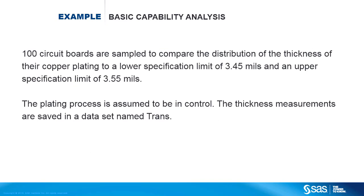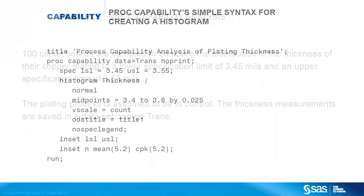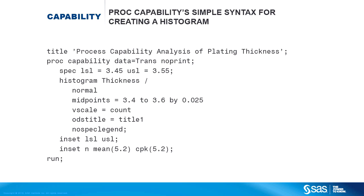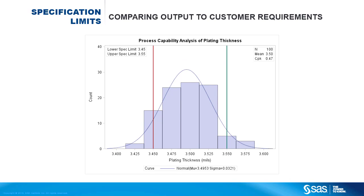Let's look at an example of capability analysis for circuit boards. The customer's specifications state that the boards must be between 3.45 and 3.55 mils thick. This code produces a histogram of the thickness measurements, augmented with two insets. Here is a histogram of thickness measurements. The value of the capability index CPK is 0.47, which indicates that the process is not very capable. The distribution is centered between the spec limits, but it is too wide. A lot of product is being produced that does not meet customer specifications.